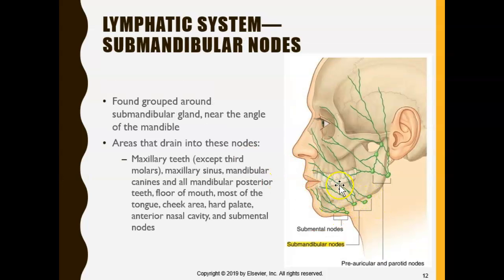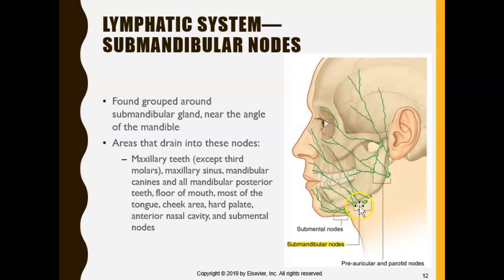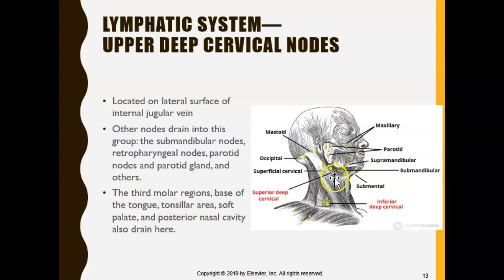The submandibular lymph nodes drain all the teeth besides the lower incisors. All the maxillary teeth, the maxillary sinus, mandibular canines, and mandibular posterior teeth all get drained here. The lower incisors are the only ones that drain into the submental nodes; all other teeth drain into the submandibular nodes, along with the floor of the mouth, tongue, cheek, hard palate, etc. The upper deep cervical nodes drain things listed in the table.